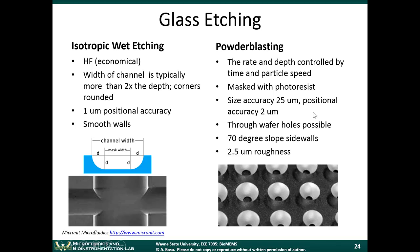If you want to drill through the entire wafer, you typically use powder blasting. With isotropic wet etching, you can't get very deep because the etchant goes in all directions. Powder blasting is more directional, so you can drill deeper holes without them becoming very wide. You can go through the entire wafer. This is an example of a glass wafer that was etched all the way through, showing the 70-degree sidewalls.